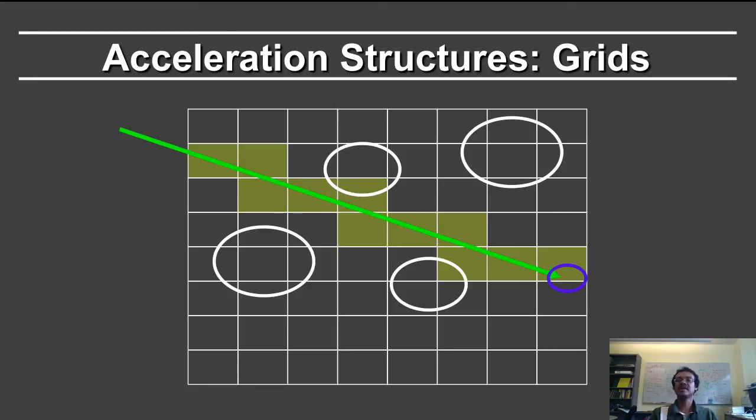One of the interesting things to note is that the two objects on the side, so this object and this object, were never tested against. There was no need to actually even test them for intersection. And so large part of the space that is not in the traversal path need never be tested for a ray surface intersection.